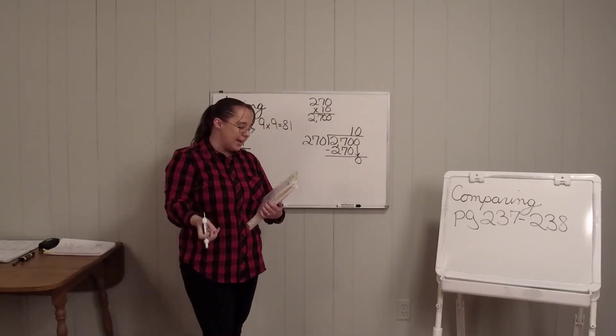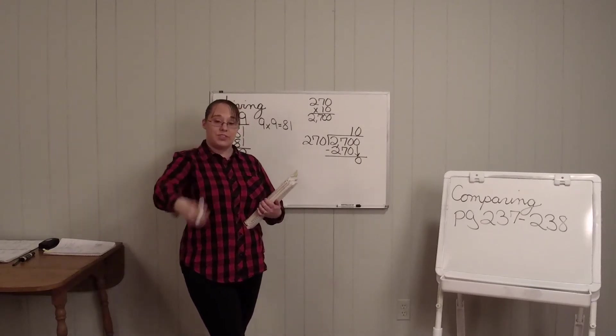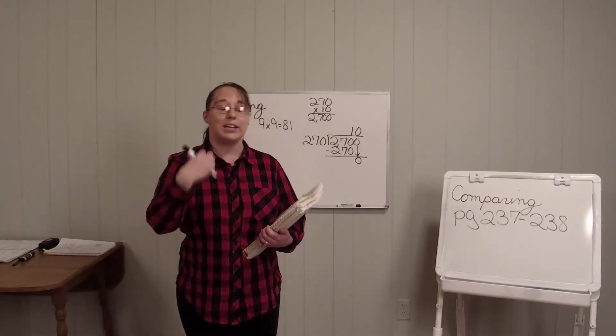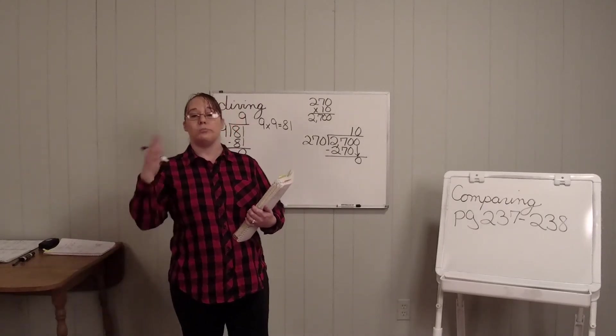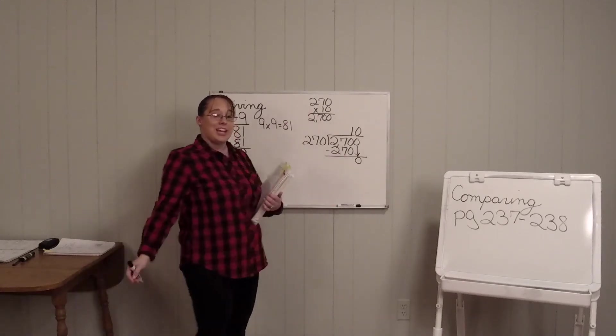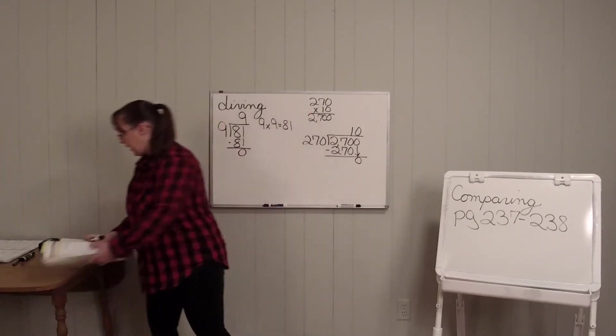So it's just saying if you had 270 miles, and you went 10 times more than that, it's going to equal 2,700 miles. So you're dividing, and you can check it with multiplication. Okay?